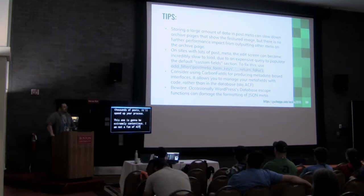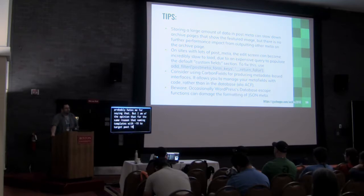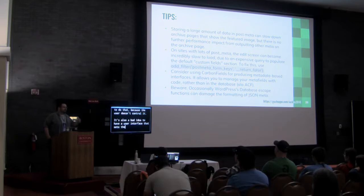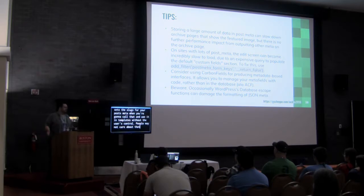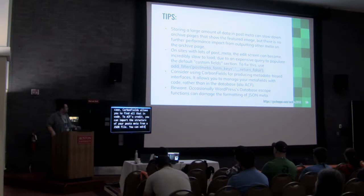I am not a fan of ACF, and everyone who uses ACF probably hates hearing that. My opinion is that for the same reason naming templates with a post ID or post slug is a bad idea because the user doesn't control it — it's also a bad idea to have a user interface that sets the slugs for your post meta keys, and then you call that in templates without the user's control. Carbon Fields allows you to define all that in code. To ACF's credit, you can import the structure of your post meta from a JSON file — it's useful, but it's still stored in the database and can still be edited on the back end without modifications.